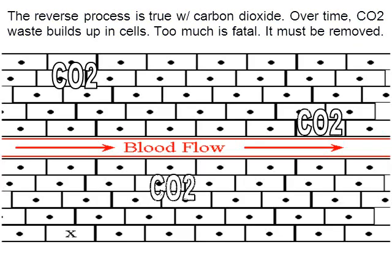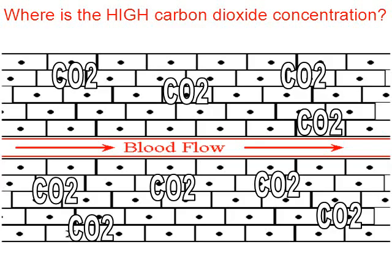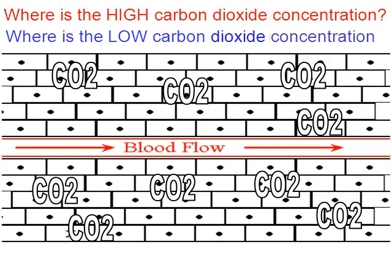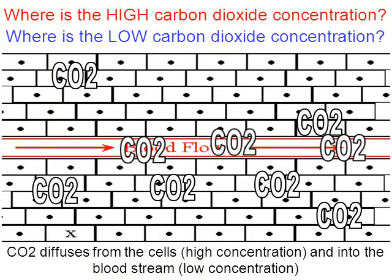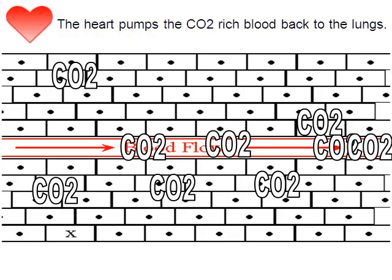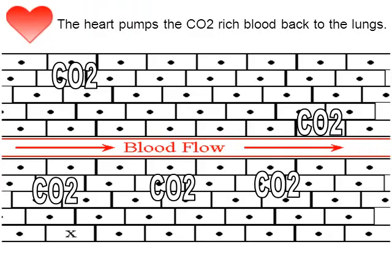This reverse process is true with carbon dioxide. Over time, your cells create carbon dioxide as a waste gas. It builds up in cells and too much is fatal — it needs to be removed. As our cells work to remove carbon dioxide, ask yourself: where is the high carbon dioxide concentration, and where is the low? The high carbon dioxide concentration is in the cells; the low carbon dioxide concentration is in the blood. So carbon dioxide is simply going to diffuse from the cells into the blood. And once the carbon dioxide is in the blood, don't forget your heart is still pumping.